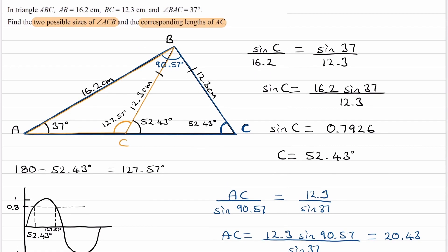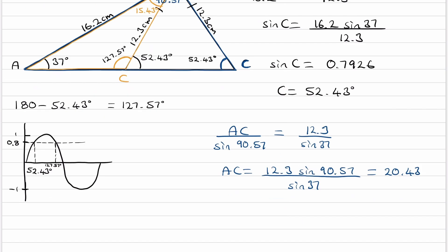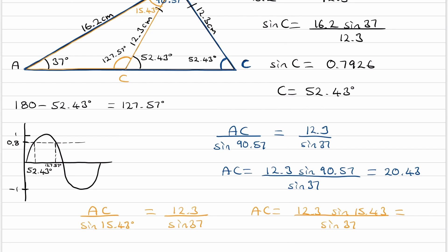For the orange triangle, we do the same. We need the angle at B opposite side AC. Using the orange triangle, the angles add to 180: 180 minus 37 minus 127.57 gives 15.43 degrees. Applying the sine rule: AC divided by sine 15.43 equals 12.3 over sine 37. So AC equals 12.3 times sine 15.43 divided by sine 37, which gives 5.43. Those are our two answers.